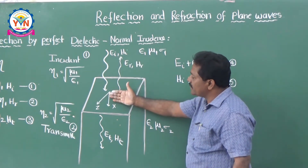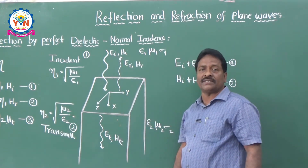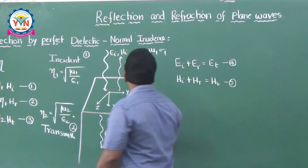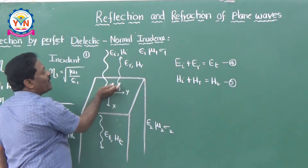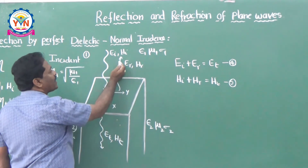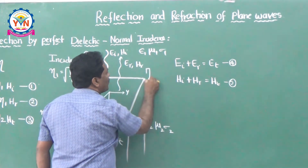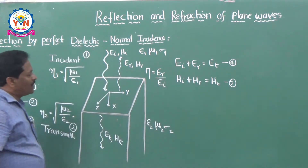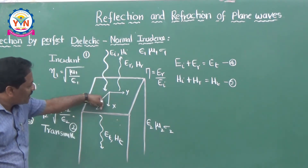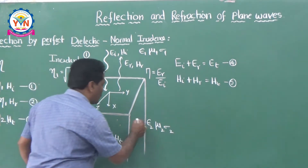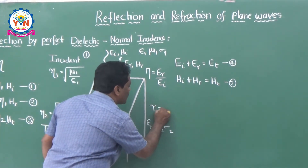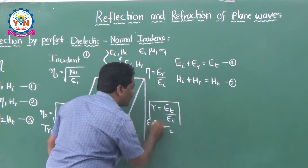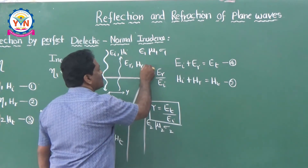From the incident system, how much is transmitted is the transmission coefficient tau, and how much comes back is the reflection coefficient gamma. The reflection coefficient gamma equals ER divided by EI, and the transmission coefficient tau equals ET divided by EI. These are the two quantities we want to calculate.